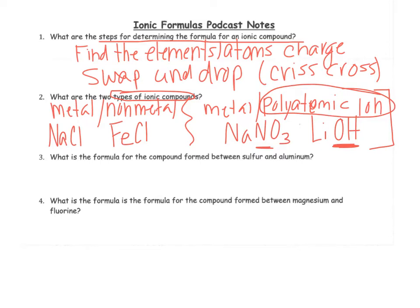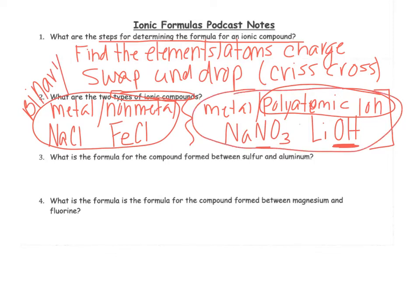We also call this part right here, where it's just between a metal and a non-metal, we call that binary. And between the metal and the polyatomic ions, we call that tertiary. See, in chemistry, you can't just learn one thing. You've got to learn it three different ways. Okay, so let's write our first ionic formula and follow the steps.